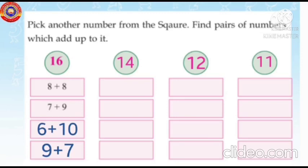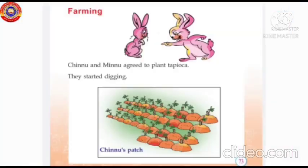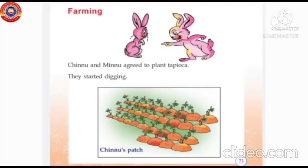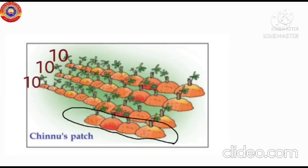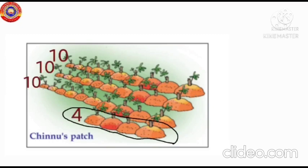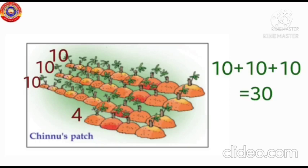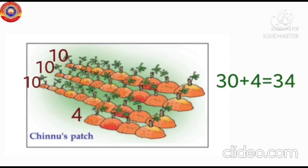Second activity, farming. Chinnu and Minnu agreed to plant tapioca. They started digging. Dear children, look here at Chinnu's patch. In the first row Chinnu planted 10 tapioca, second row 10, third row 10, last row only four plants. Total how many plants are there? Three rows of 10, that is 30, last row only four. That is 30 plus 4 is equal to 34.